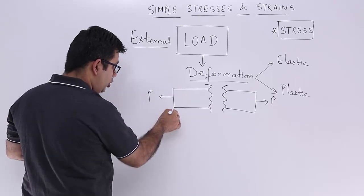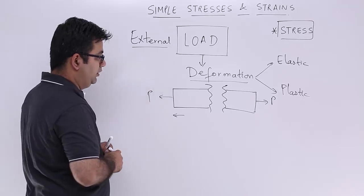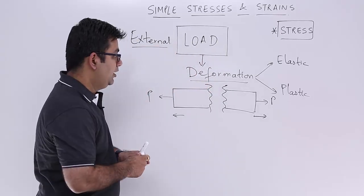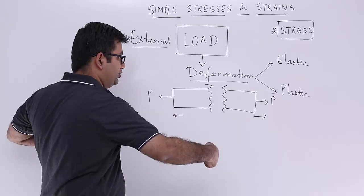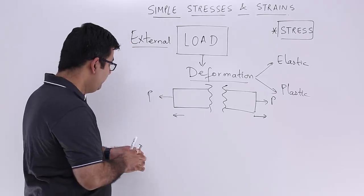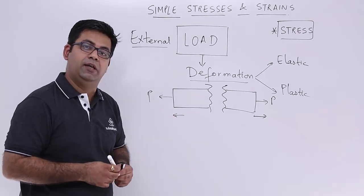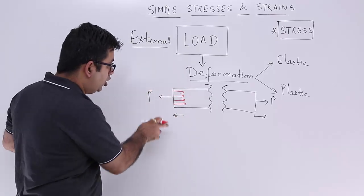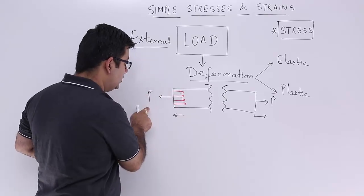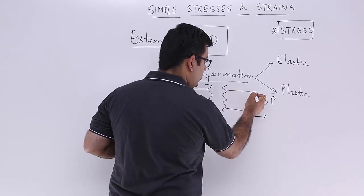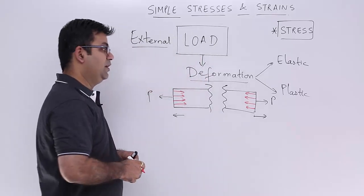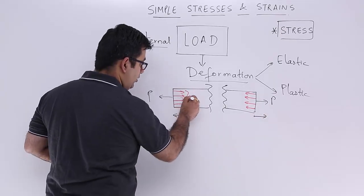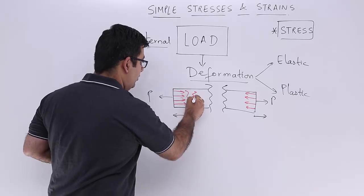You have a body with loads applied at its two ends. The load on the left tends to pull the body towards the left, and the load on the right tends to pull it towards the right. This body will not want to be pulled in both directions, so the internal fibers of this material will start resisting this load — all these fibers are actually trying to resist this pulling force.